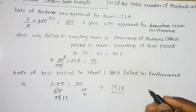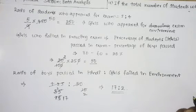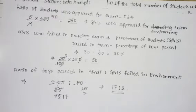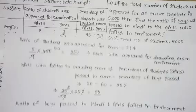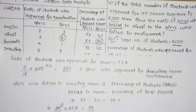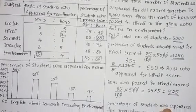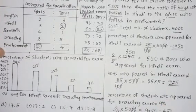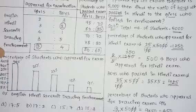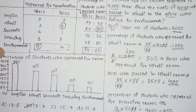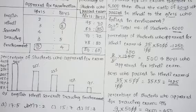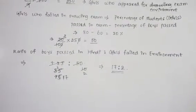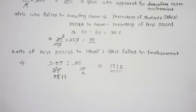Looking at the options — 17 is to 5, 17 is to 2, 15 is to 7, and 15 is to 3 — we can confirm option B, that is 17 is to 2, is the correct answer. Thank you friends for watching, and do subscribe to the channel for more updates.